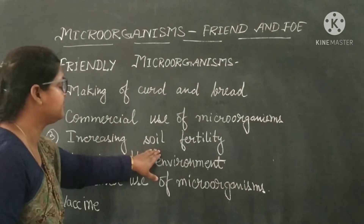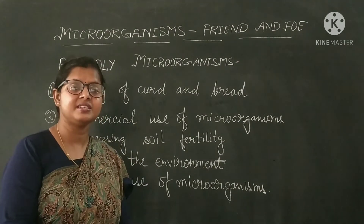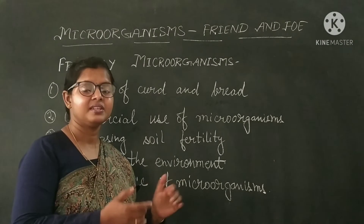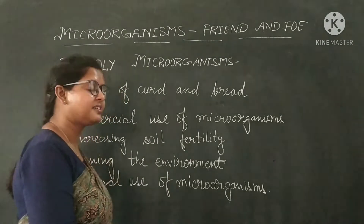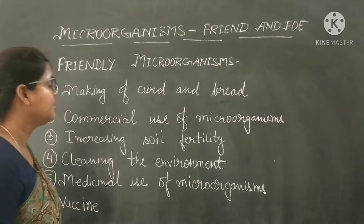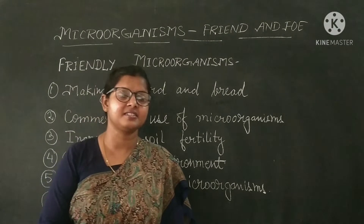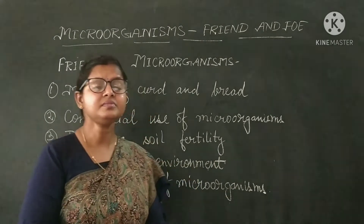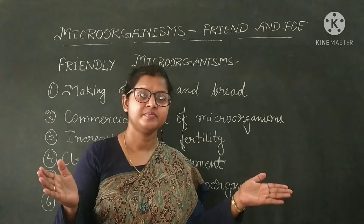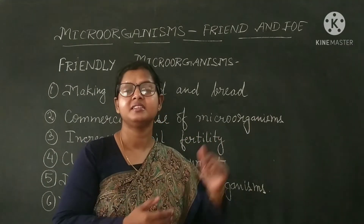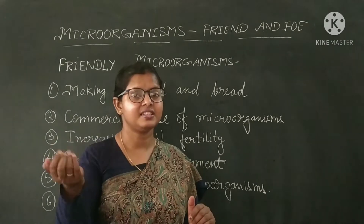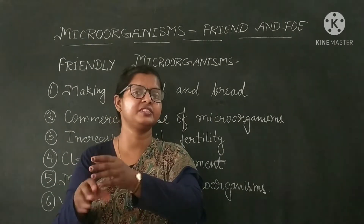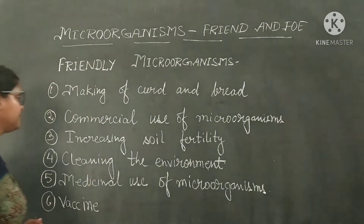We also discussed increasing soil fertility — bacteria present in soil and root nodules of leguminous family plants trap atmospheric nitrogen and convert it into a usable form, so the fertility of soil increases. And for cleaning the environment, all dead and decaying organic matter is decomposed by microorganisms and gets mixed into the soil, cleaning the environment and increasing soil fertility. In both ways, they are beneficial.